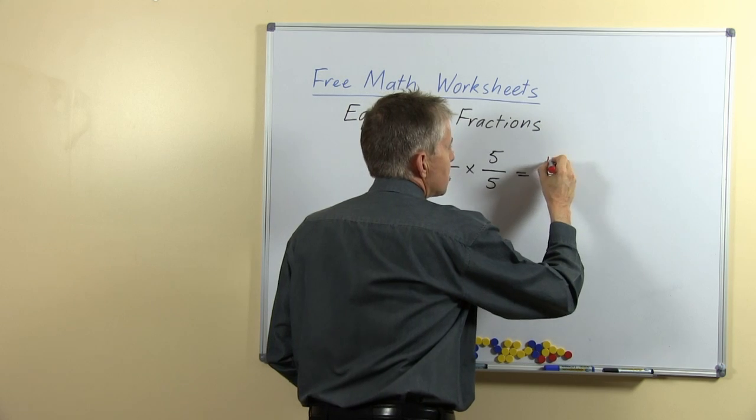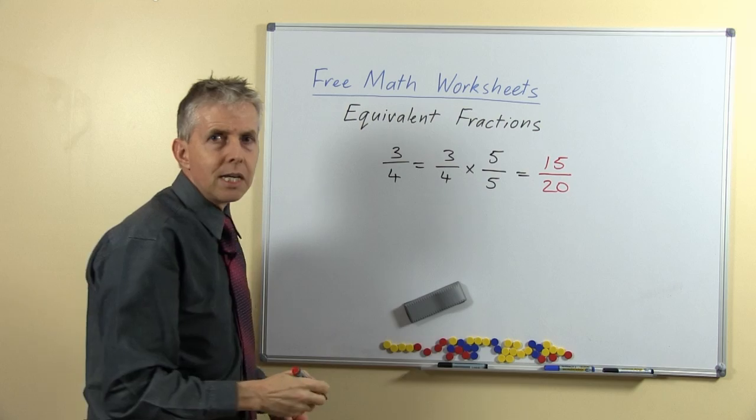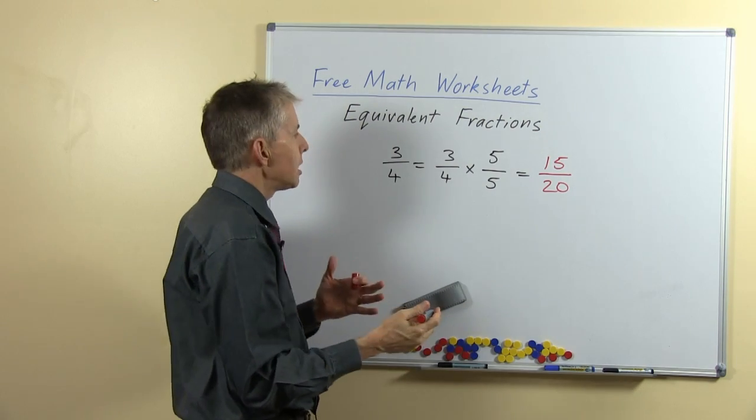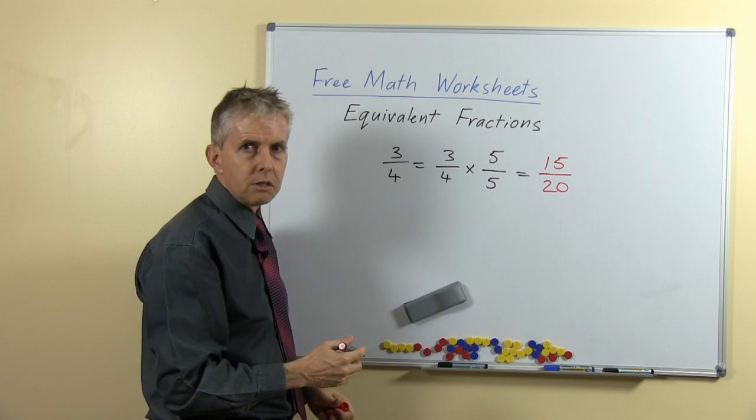If we multiply the top two numbers, we'll have 15. Multiply the bottom two numbers, we'll have 20. So we can see symbolically, mathematically if you like, that three-quarters is equal to fifteen-twentieths using that method.